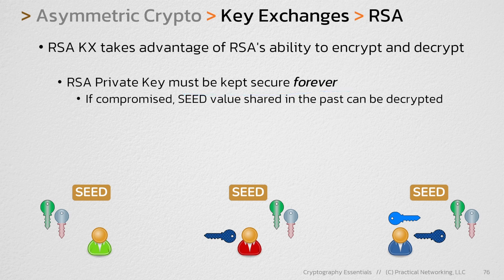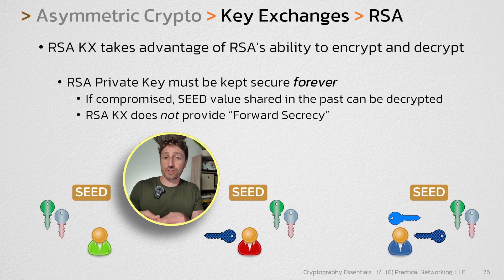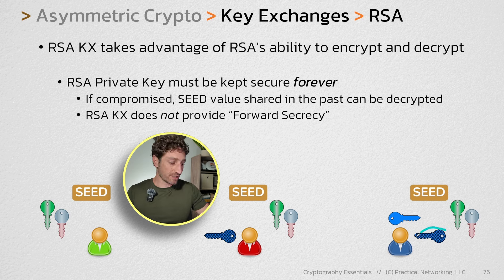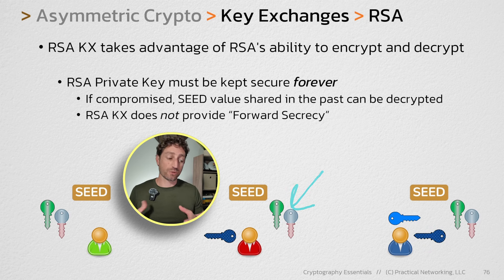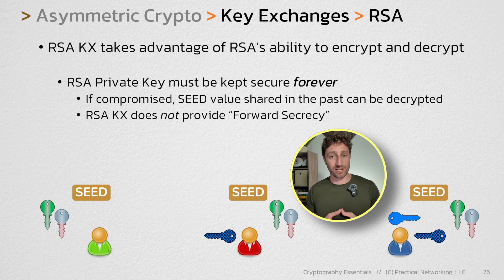This defeats a concept in cryptography known as forward secrecy. The idea behind forward secrecy is anything secured with a particular set of keys will be assured to be secured indefinitely. But in the case of RSA, if someone gets a hold of this value, they can easily recreate the same symmetric keys which secured any data between the green and blue user. So RSA as a key exchange does not provide forward secrecy.